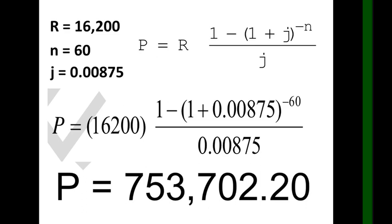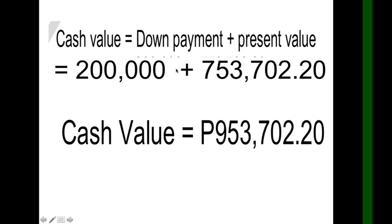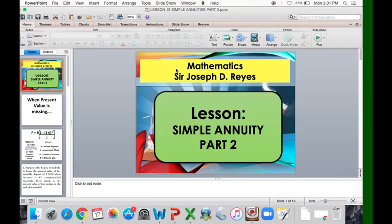But what is now the cash price? We don't have the cash price yet because, if you remember, Mr. Reyes made a down payment of 200,000. Therefore, we'll just add the down payment plus the present value. So what we solved is 753,702.20, and the down payment is 200,000.